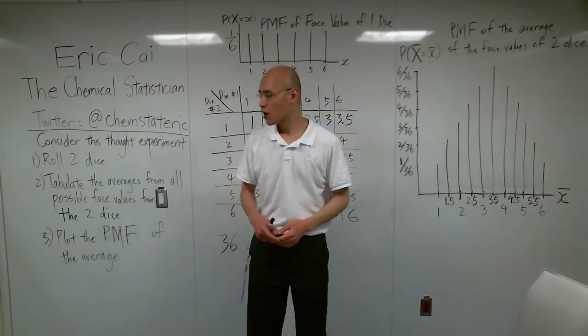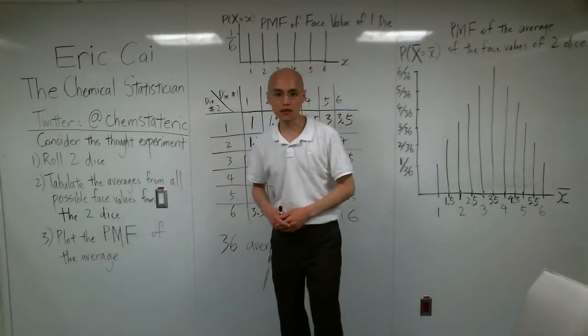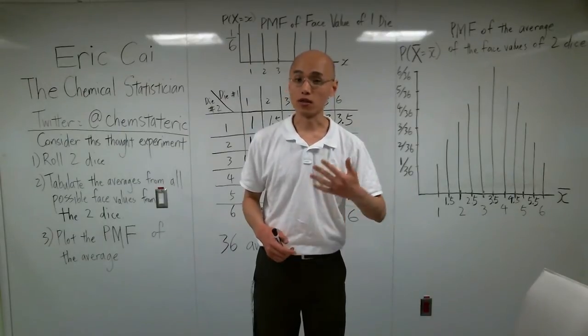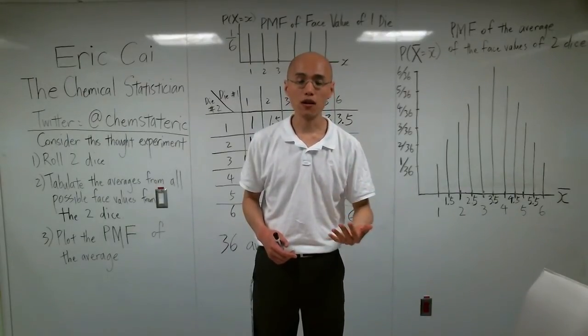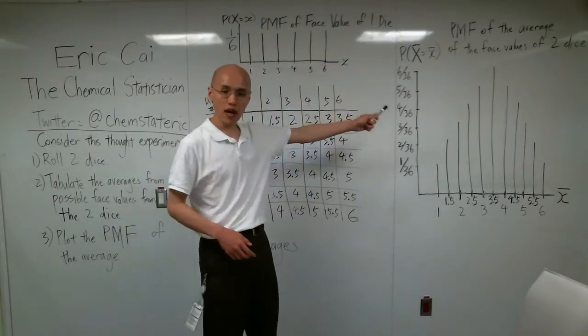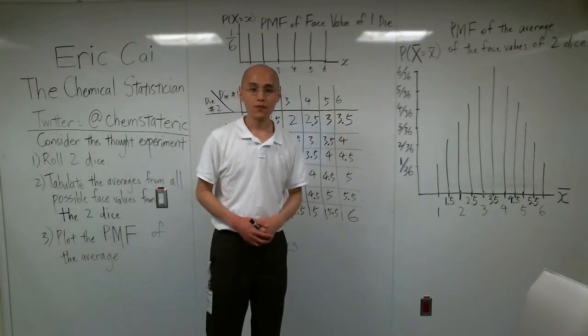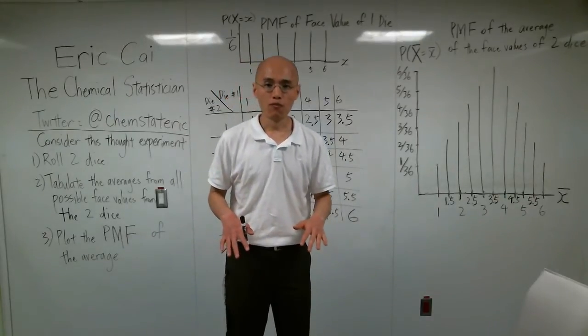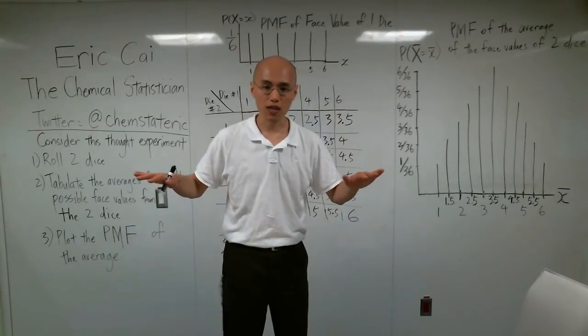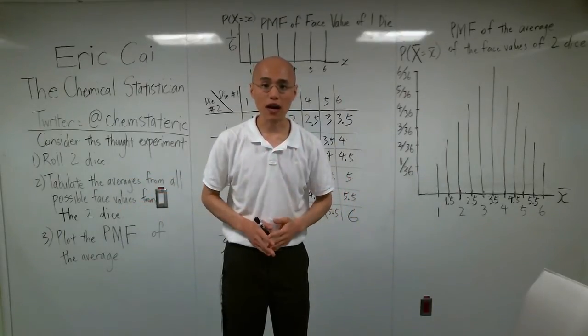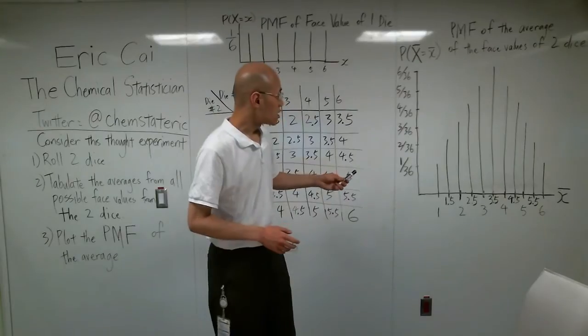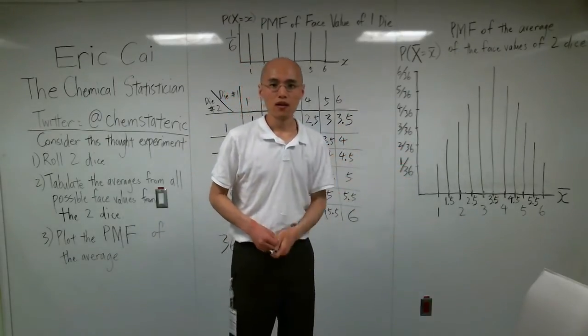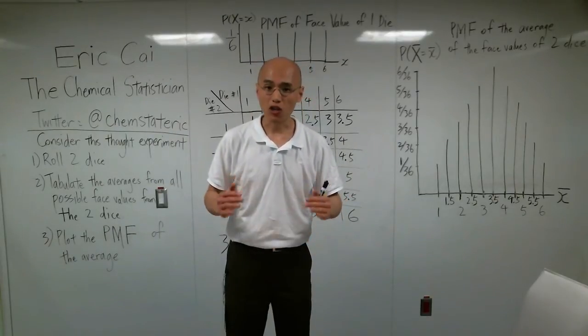Now, here's a question for you. What if I rolled more than 2 dice in this experiment? What if I rolled 3 or 4 or 5 or 10 or 50 or 100? What would happen to the shape of that curve? Well, if I rolled more dice, then we're going to have a lower proportion for the extreme values and a higher proportion for the middle values. So, that bell curve, or that normal-like curve, is going to be skinnier and taller.